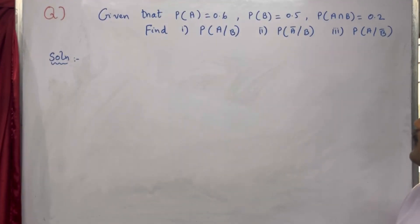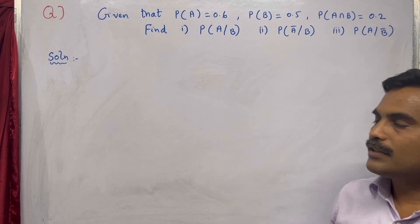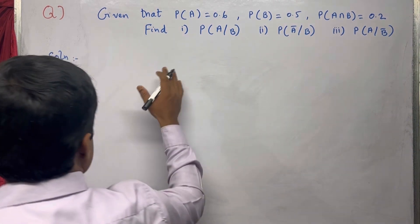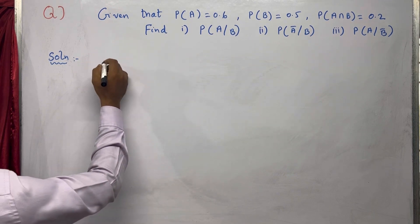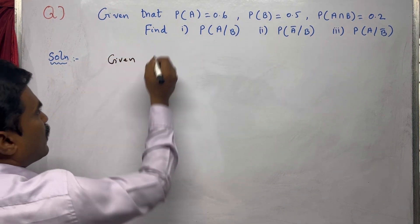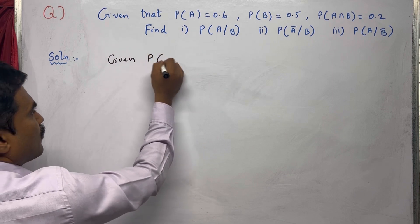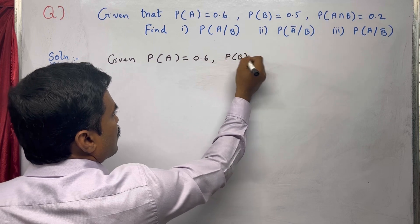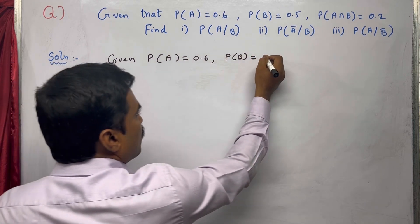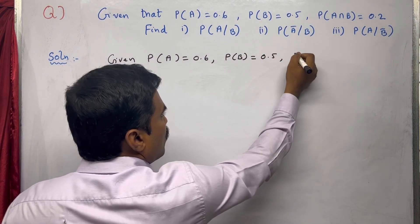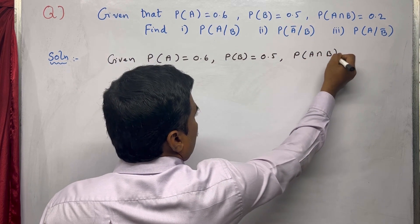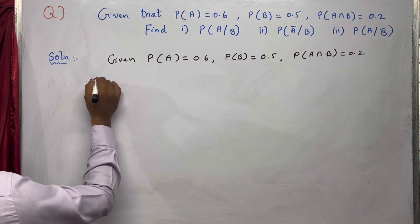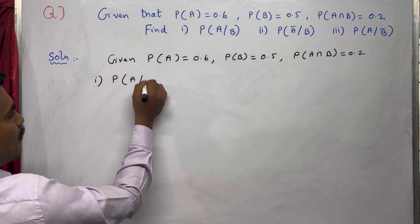For this, we are going to use the conditional probability formulas. Before that, we write the given values. P(A) = 0.6, P(B) = 0.5, and P(A∩B) = 0.2. Now first we will find P(A|B).